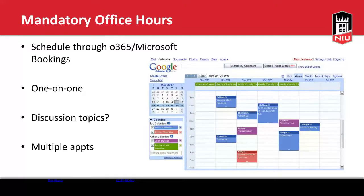One thing I like to do is set up mandatory office hours, which can be done face-to-face or virtually. For virtual, I recommend scheduling through Office 365 and Microsoft Bookings. You give students a list of available times, they pick one that works, and it goes right on your calendar. Any slots that aren't filled remain blank, so you don't have to wall off your entire day. You can do this one-on-one and have specific discussion topics prepared for when they arrive.